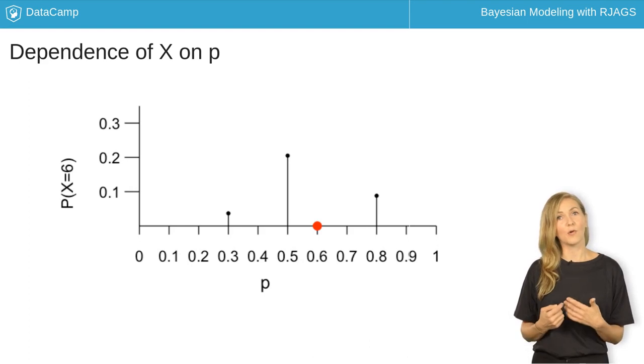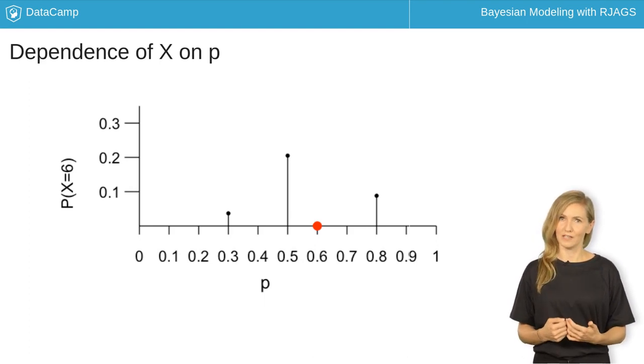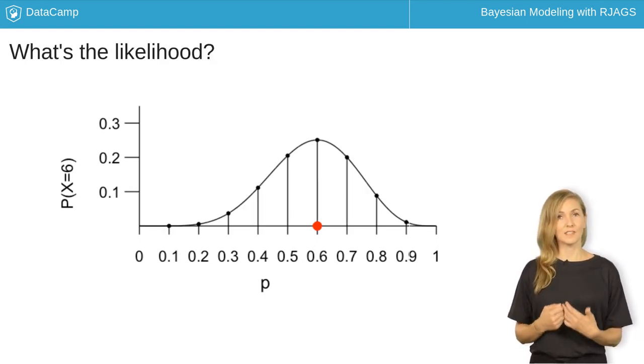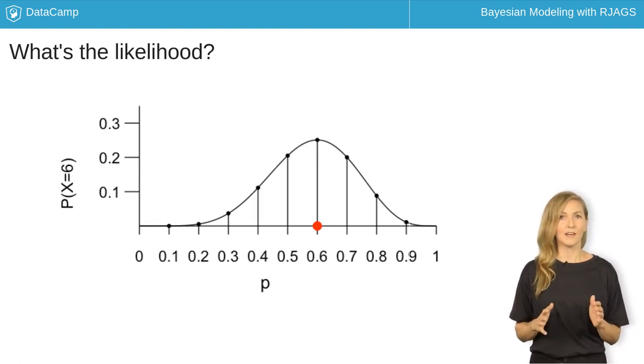Further, it's possible, though unlikely, that you would observe such a relatively high poll result if your underlying support were only 30 percent. Similarly, we can calculate the likelihood of these poll results for any level of underlying support p between 0 and 1.